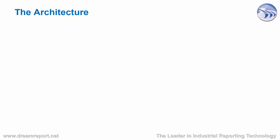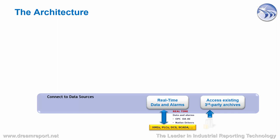So let's take a look at the architecture in a little more detail. DreamReport can access existing third-party data sources, such as process historians, relational databases, OPC historical data files, or even CSV files.